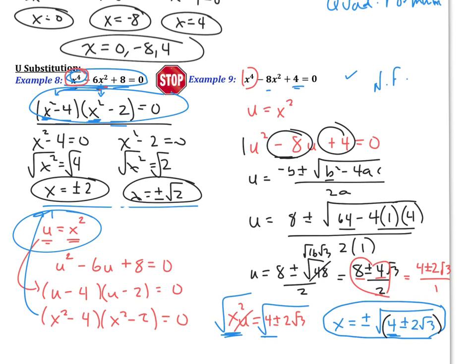Quick overview: you need to understand the idea of u-substitution, the quadratic formula, and how to solve an absolute value equation — meaning two possible solutions. And remember, anytime you have even roots you need plus or minus. That is one of the things people forget the most, so please remember your plus or minus.